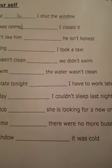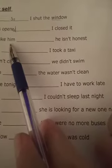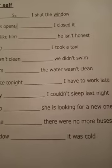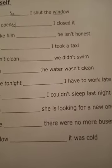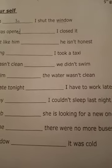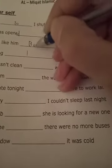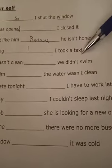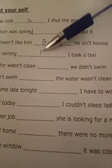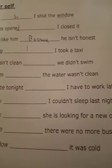Number three: 'She doesn't like him. He is not honest.' هو مش صادق — she doesn't like him because he is not honest. Yes, it's 'because'. Number four: 'It was raining. I took a taxi.' The effect is that I took a taxi as a natural result. So: 'It was raining, so I took a taxi.'